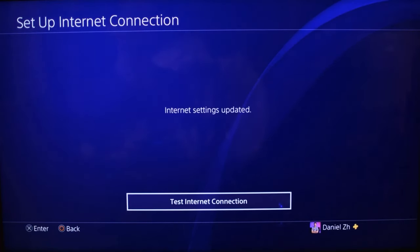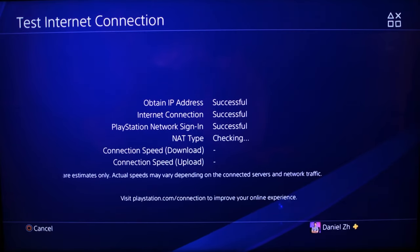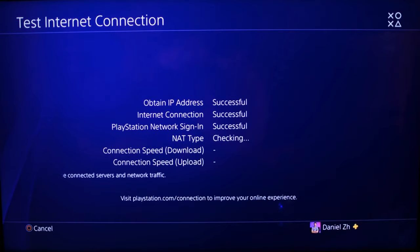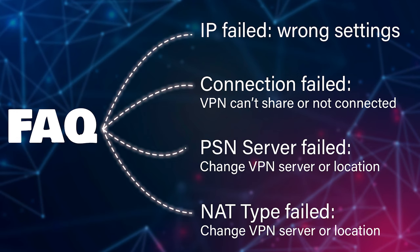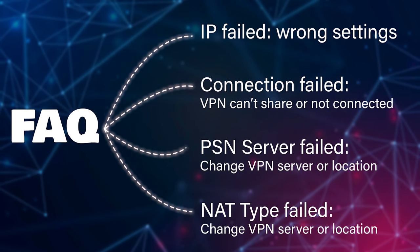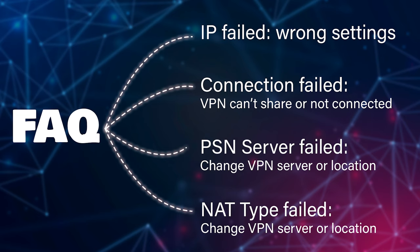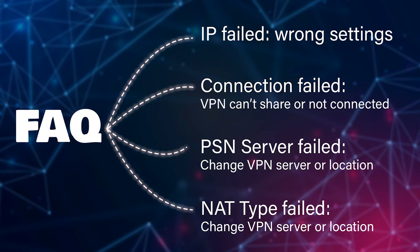Leave the rest of the settings as default to finish setting up VPN on your console. Then test the internet connection. If the IP test fails, some settings are wrong. If the internet connection fails, the VPN isn't sharing, the VPN doesn't support sharing, or it has server issues. If PlayStation Network or NAT type fails, change the VPN server — some VPNs have servers that can't connect to PSN, Nintendo, or Xbox Live. I recommend using the VPNs mentioned in this tutorial. For Wi-Fi sharing, do the same settings but select Wi-Fi instead of LAN cable.